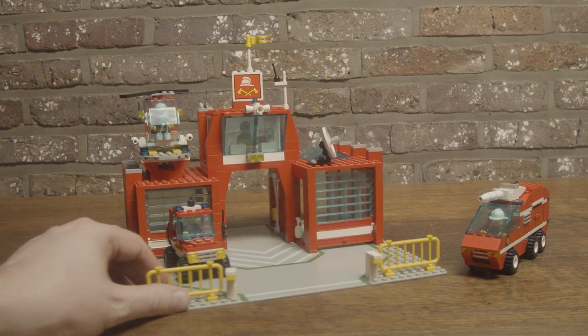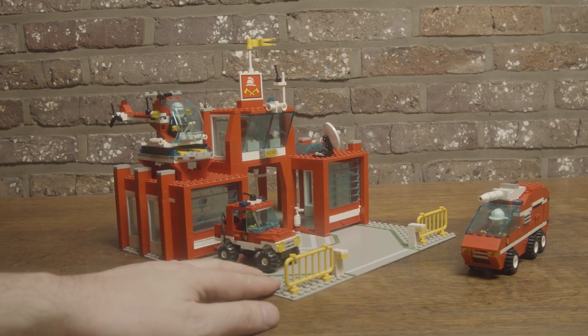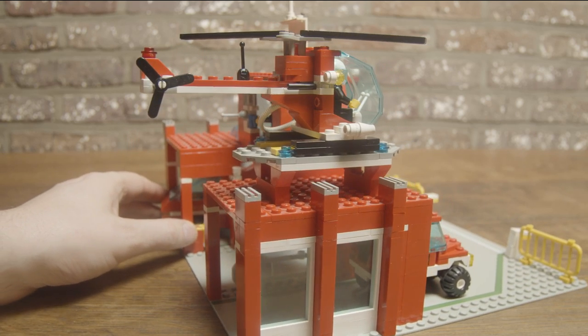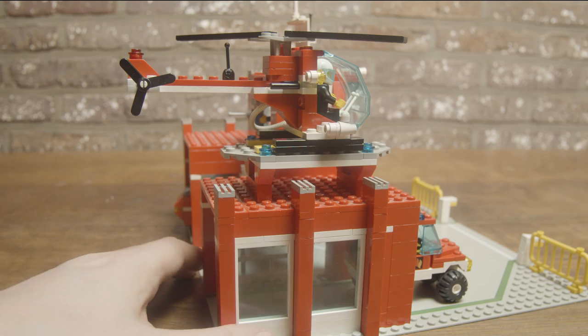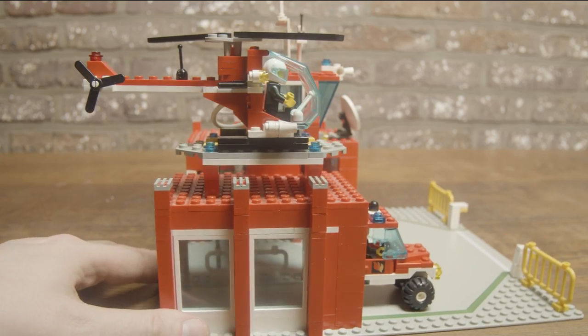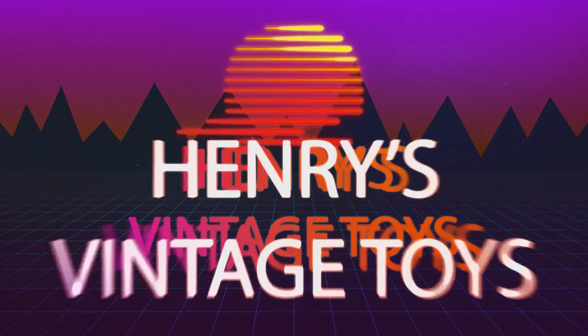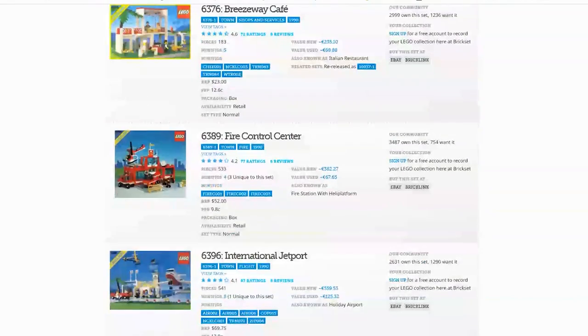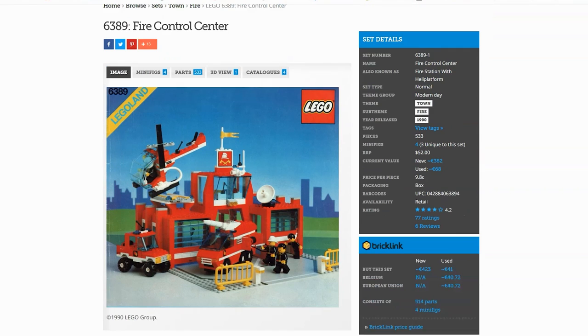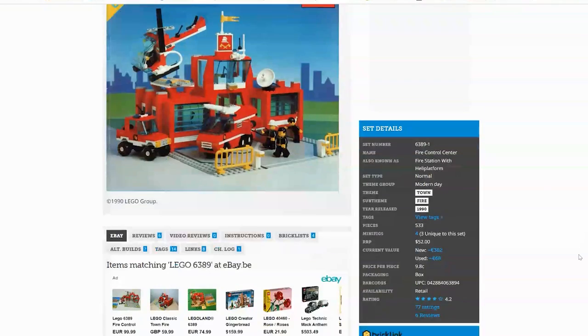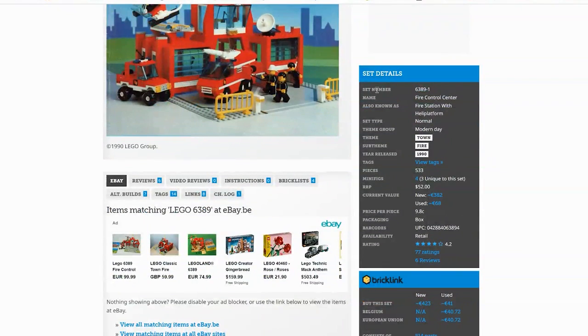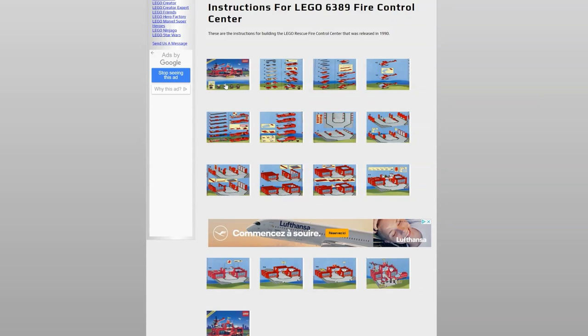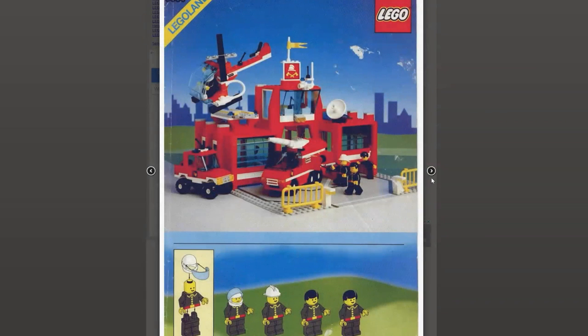Hello, Henry from Belgium here. Today I am reviewing the LEGO set 6389 Fire Control Center from the year 1990. Keep watching the video. I bought this set second hand without box or manual, so first of all I collected some information on the internet and downloaded the manual.